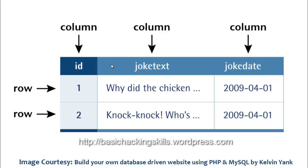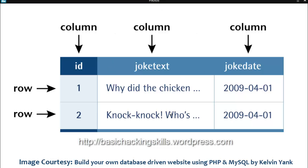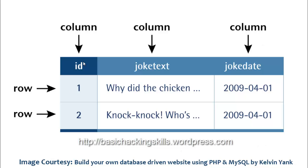A table can have different columns. In our case, we can have ID, username, and password. The ID is for unique identification of different entries. I hope you now have a basic idea about data representation in MySQL.